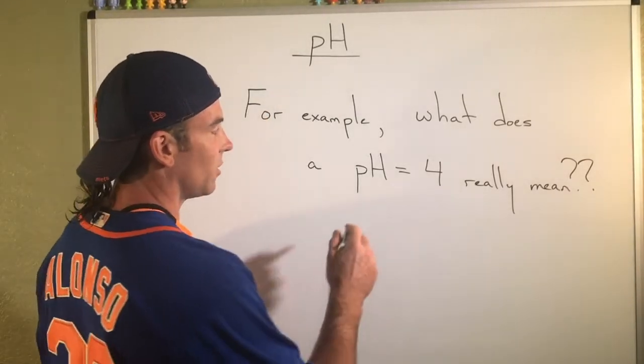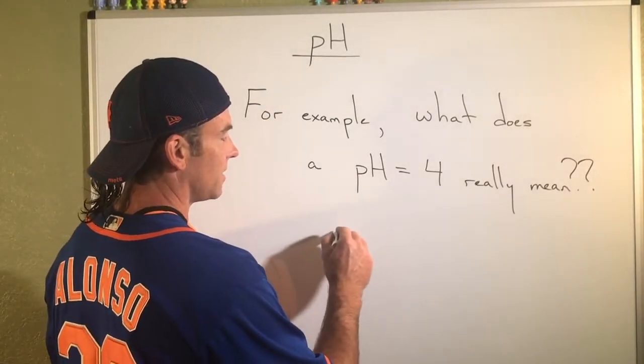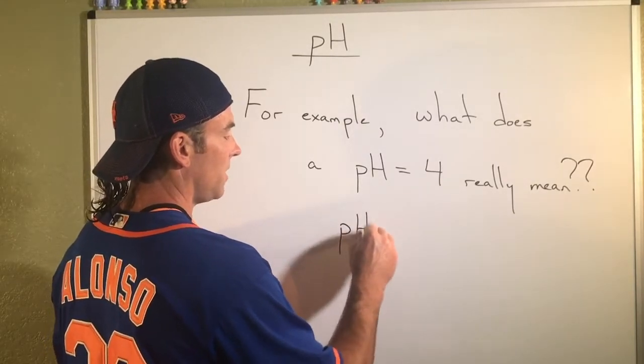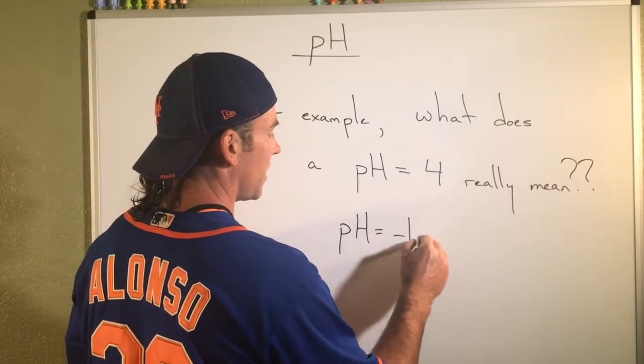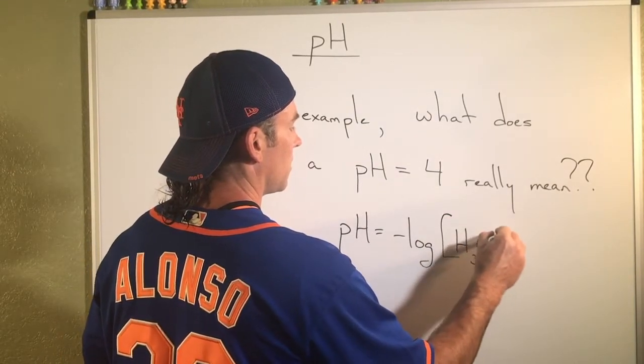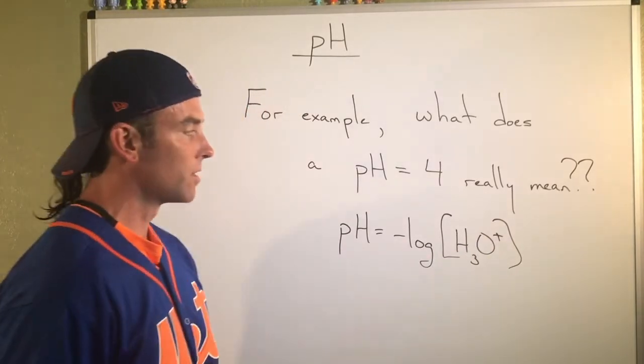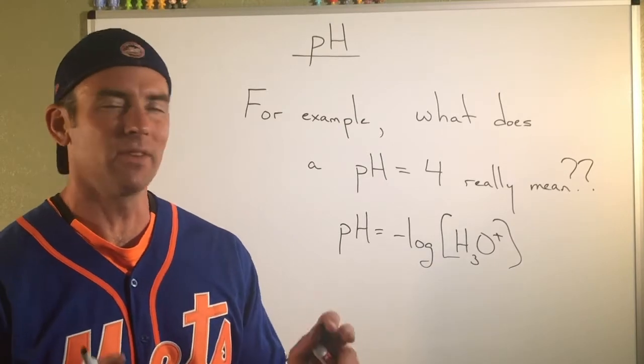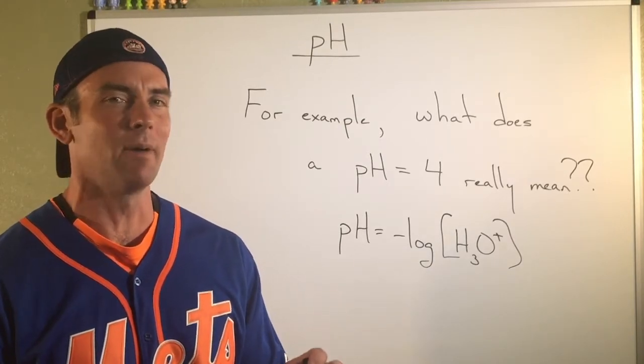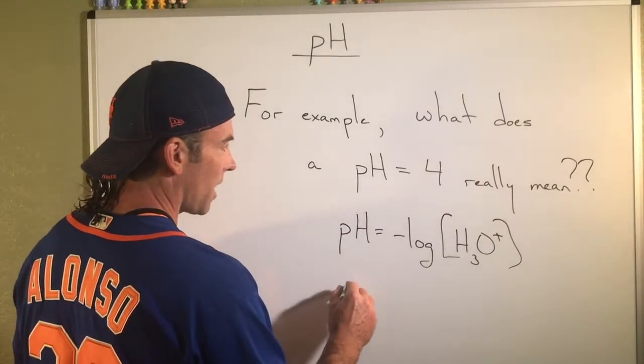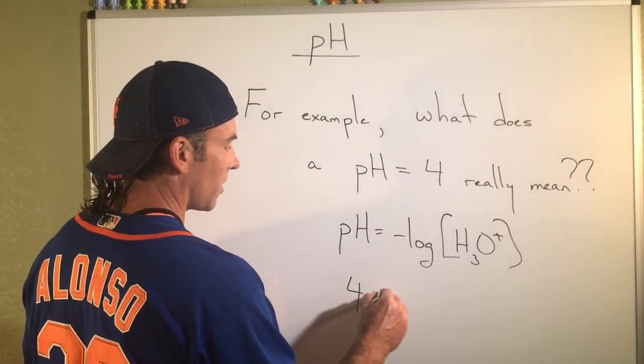Well, if you just take a look at this definition of pH equaling four, we've got pH is equal to the minus log of some sort of H3O+ concentration. And we can solve this algebraically, but let's not do that. Let's just think about what must be true here. Well, it turns out that I could just plug in a pH of four here.